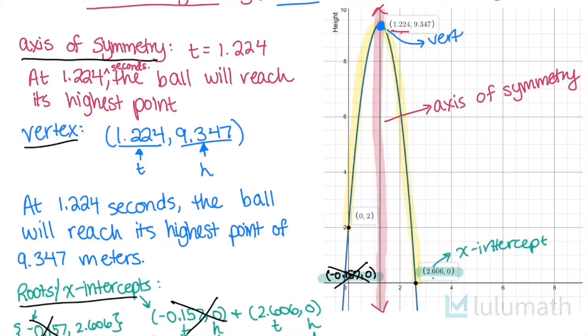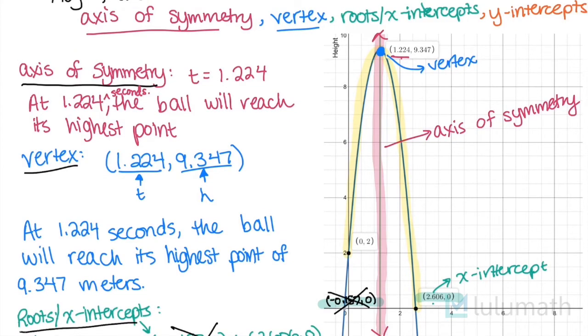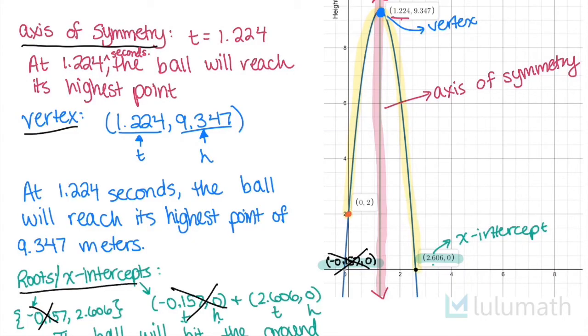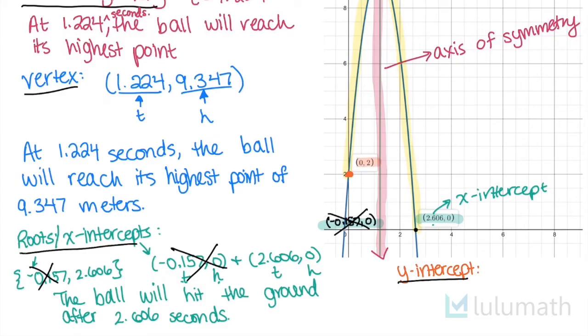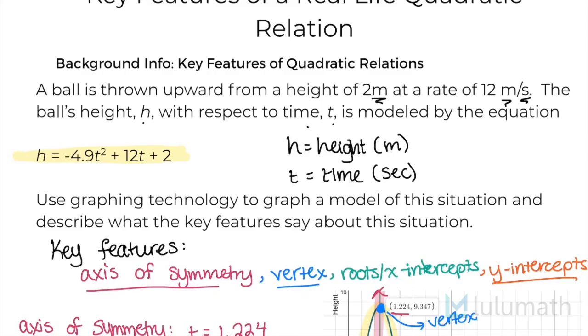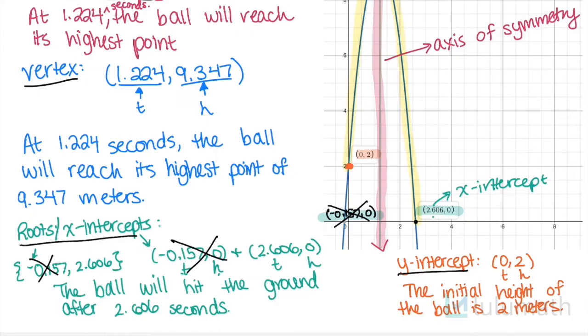And this is our x-intercept. And really quickly I just want to label that this is our vertex because I hadn't labeled that. And then the last thing we have is our y-intercept. And this point right here on the y-axis is our y-intercept. So we can say that it is this (0, 2). So just a reminder that the 0 is the time and the 2 is the height. So what this is saying is at time 0, at the beginning of what happened here, the height was 2. Therefore we can say that the initial height of the ball is 2 meters, which we knew from our information that's given to us because it tells us that the ball is thrown from a height of 2 meters. And that's what the key features will tell us about this specific scenario.